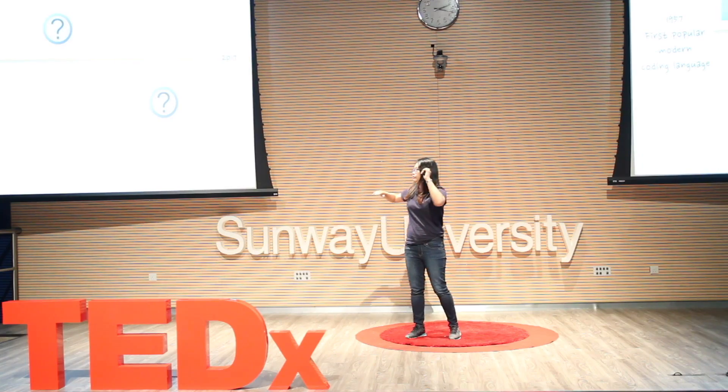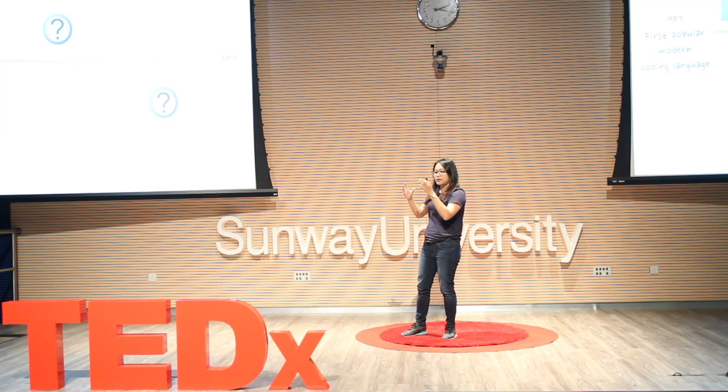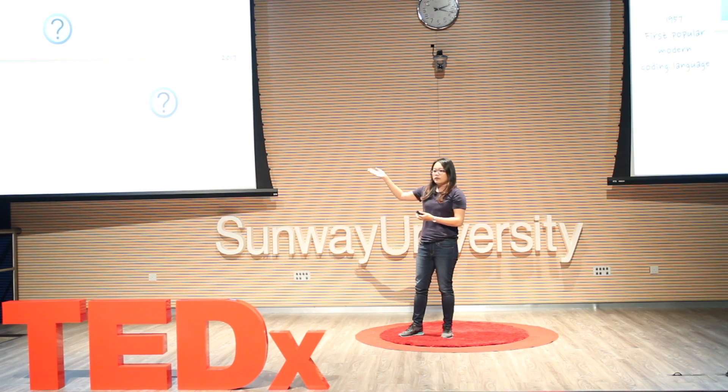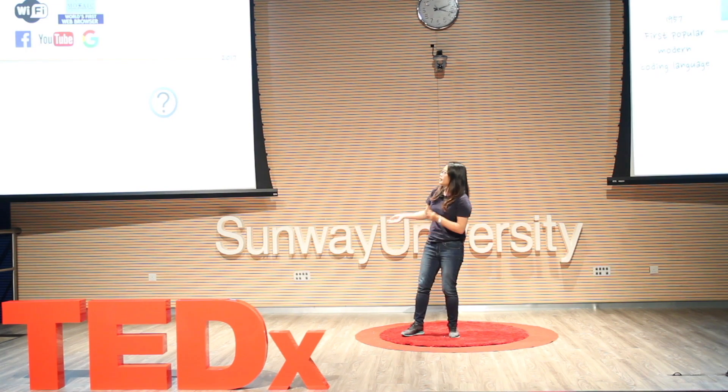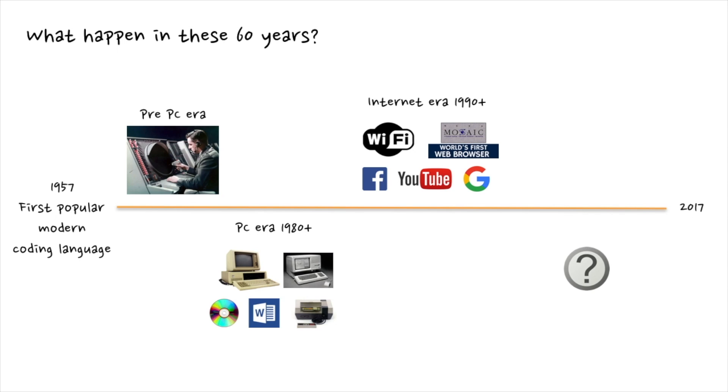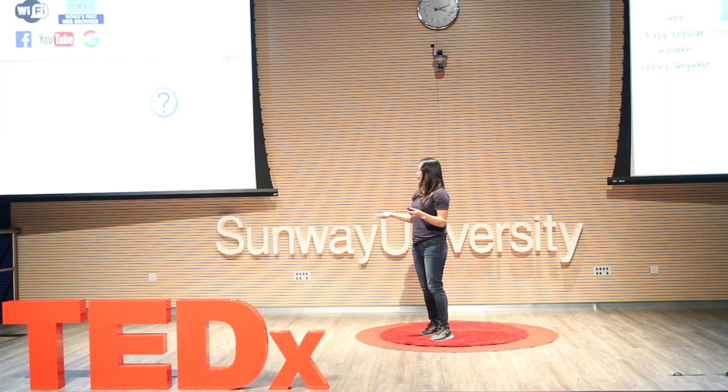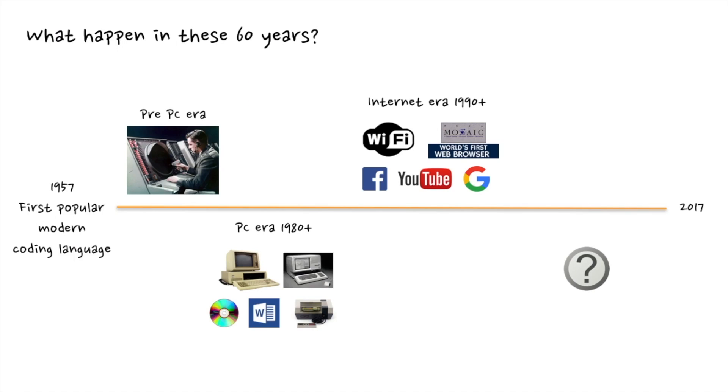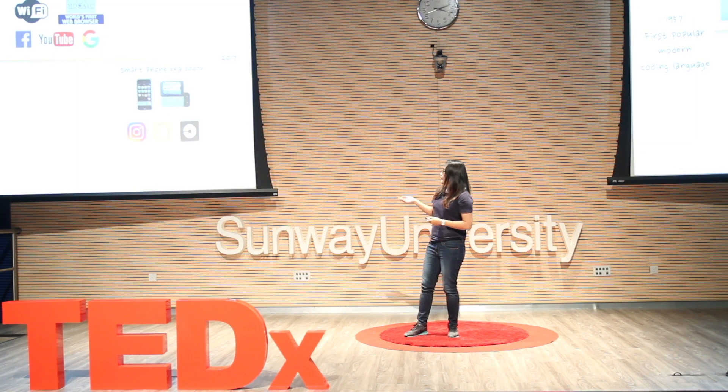Until today we have gone through quite a bit. I separate that into four eras. The first is the pre-PC era — we already had computers, but they were only for business purposes, big and bulky. Then we had the PC era: personal computers for home use, with software like Microsoft Office. In the 1990s came the internet and Wi-Fi — that's why most of you who sat down can't survive without it — and we got Facebook, YouTube, and Google. Then just 10 years ago, the smartphone era arrived. Now everyone has a mobile phone with apps like Instagram, Snapchat, and Uber that make our lives convenient.